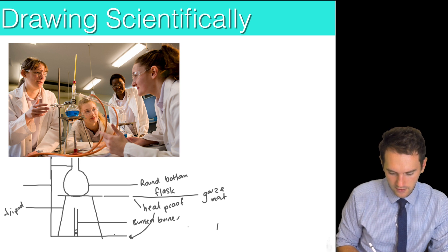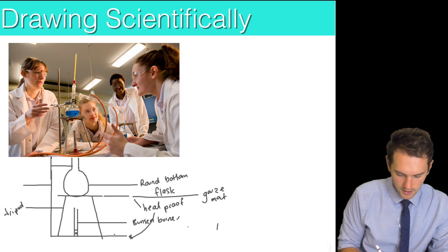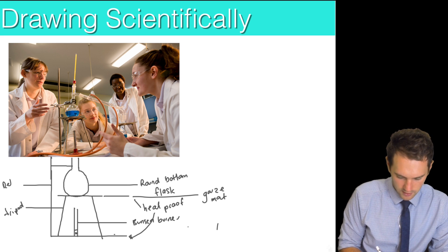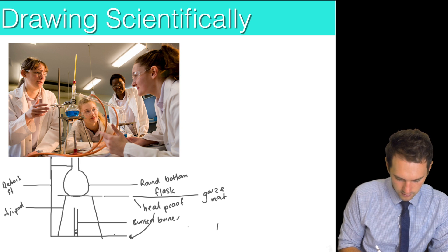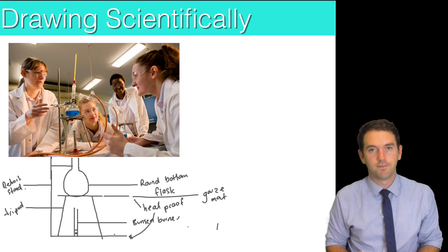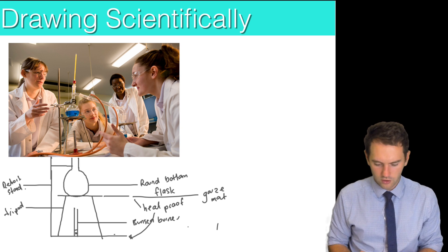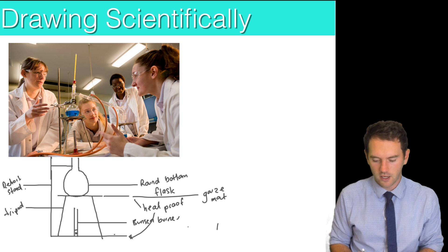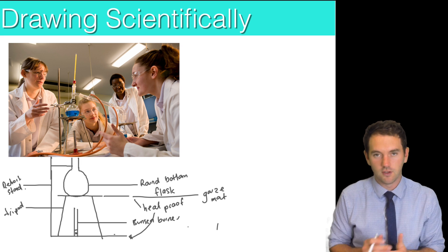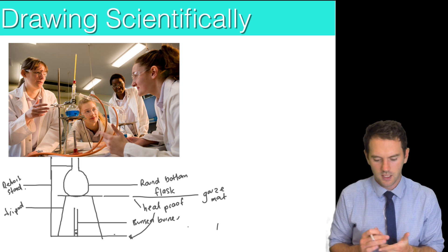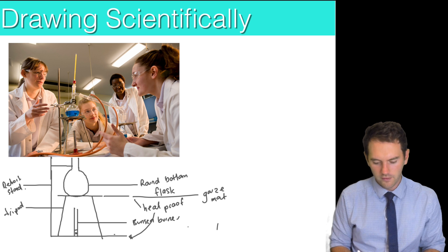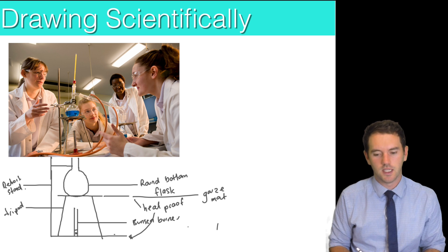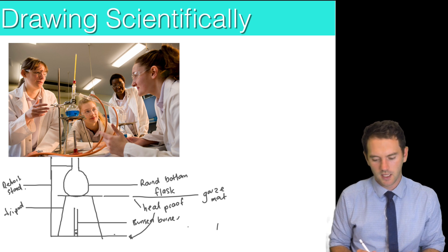You'd be a lot neater than I am, I'm a bit rushing, and a retort stand. So there's an example of what your apparatus would look like drawn scientifically. You'd be a lot neater in your book than I am here but you can see I've used a ruler, a pencil, it's two dimensional and all of the equipment are actually in proportion to what they would be in real life.